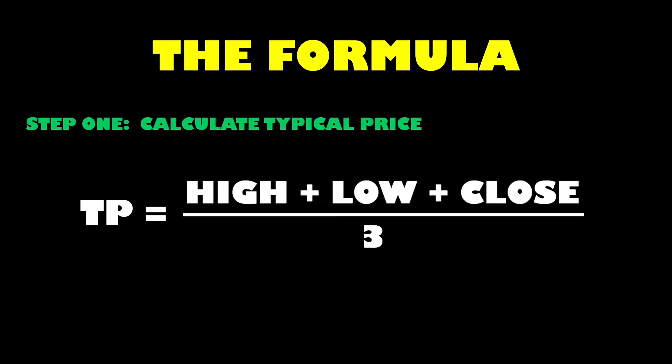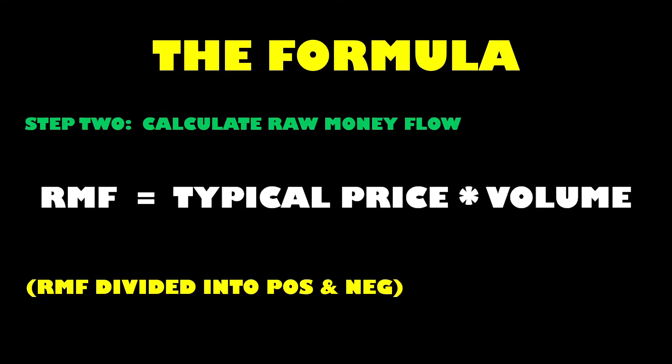Step 1 for getting your money ratio: calculate the price for each period as the typical price — that is the high plus the low plus the close divided by 3. Once we've got the typical price, we calculate the raw money flow by multiplying the typical price by the volume for the period. The raw money flow is split into positive money flow when price increased from the previous period, and negative money flow when price decreased.